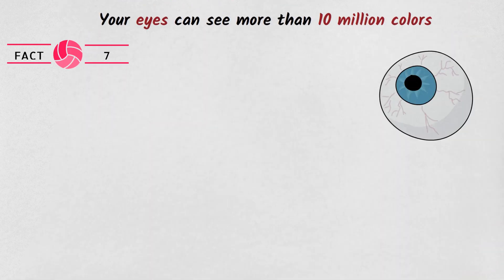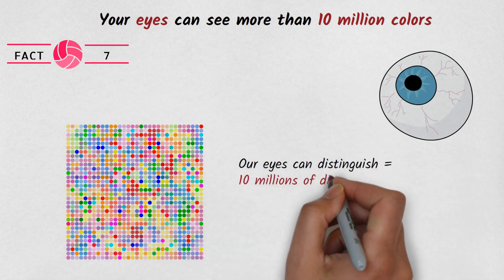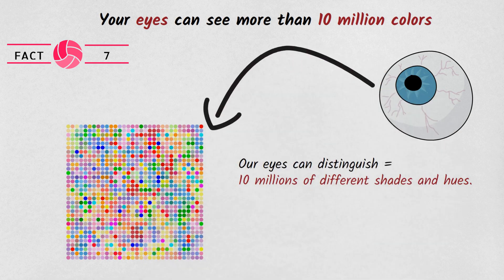Fact number 7. Your eyes can see more than 10 million colors. While we often talk about the three primary colors red, blue, and green, our eyes are actually capable of distinguishing millions of different shades and hues.